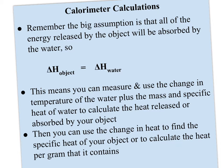You can measure and use the change in temperature of the water plus the mass and specific heat of water to calculate the heat released by your object. Then you can use the change in heat to find the specific heat of your object or to calculate the heat per gram that it contains because we assume those two values are equal.